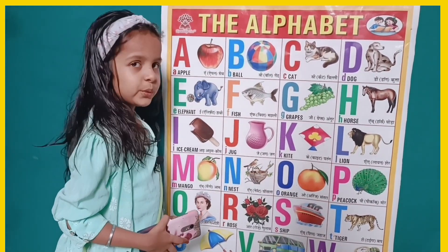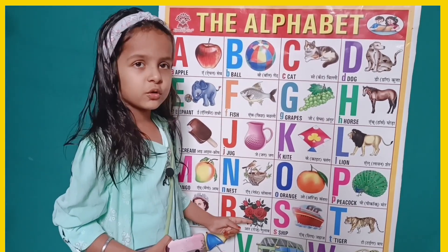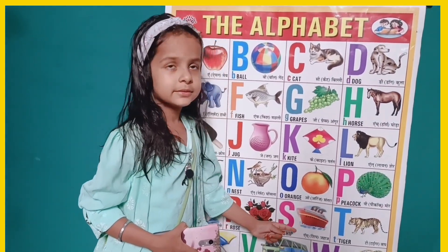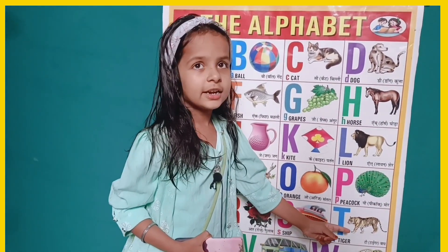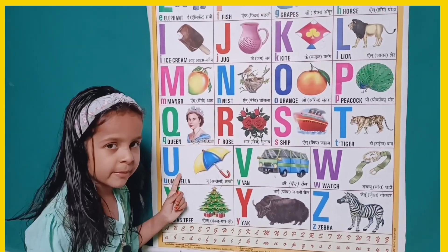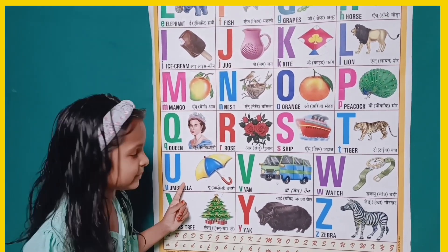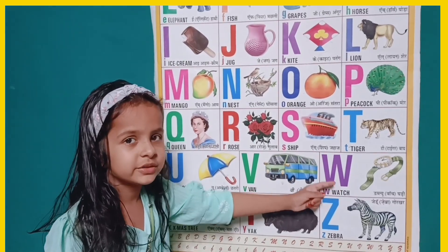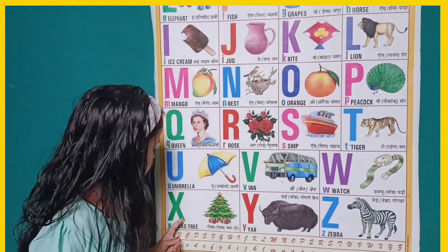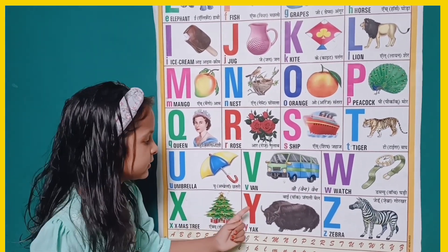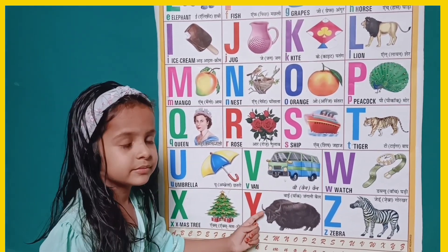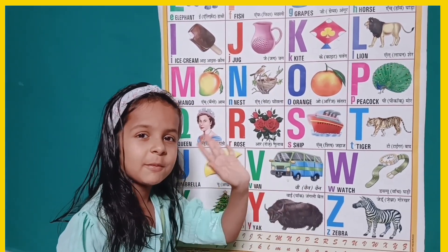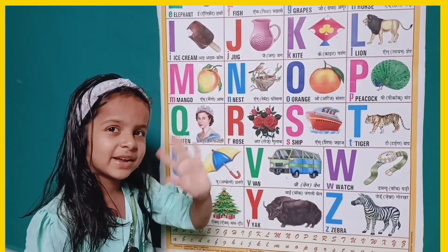Q for queen, R for rose, S for sheep, T for tiger, U for umbrella, V for van, W for watch, X for xylophone, Y for yak, Z for zebra. Bye bye!